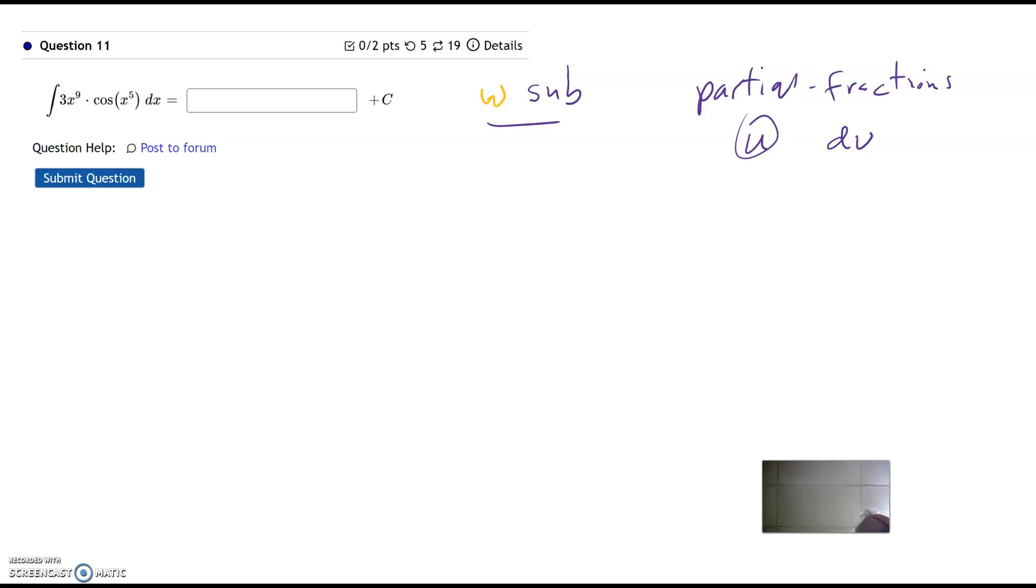All right, so let's start by saying let w equal the embedded function, the x to the fifth. Okay, and then dw is 5x to the fourth power times dx. Okay, and then like usual, you can solve for the dx. So dw divided by 5x to the fourth equals dx.